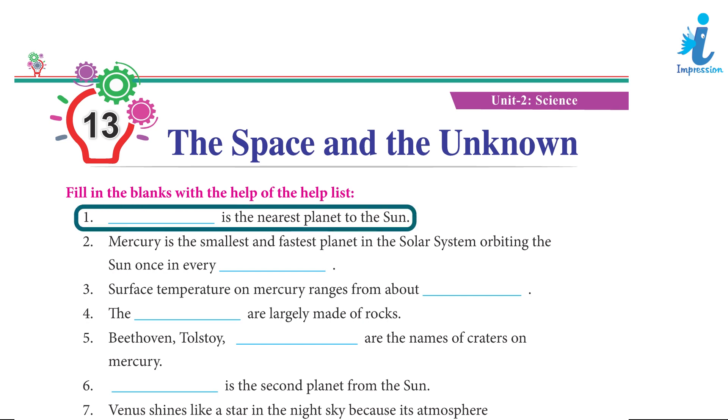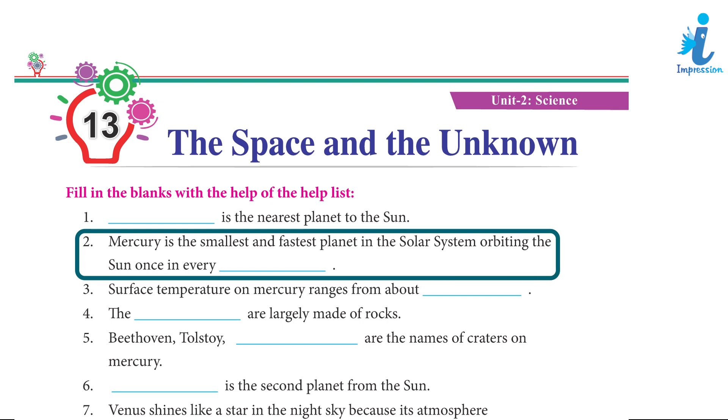1. Mercury is the nearest planet to the Sun. 2. Mercury is the smallest and fastest planet in the solar system, orbiting the Sun once in every 88 days.